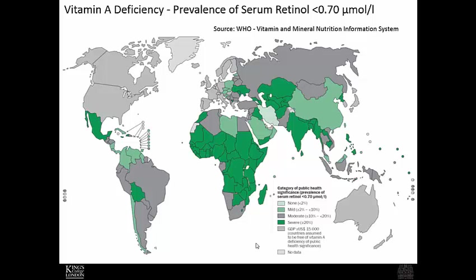This heat map indicates where vitamin A deficiencies are most prevalent. Darker green countries have a severe public health problem with low serum retinol concentrations. Because there's no well-established biomarker cutoff, we use serum retinol less than 0.7 micromoles per liter as the deficiency threshold. More economically developed regions tend to have less prevalence, while severe levels — affecting more than 20% of the population — tend to be in economically underdeveloped areas.